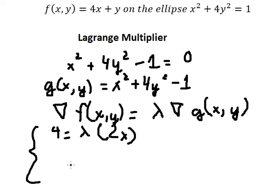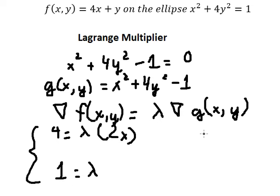The second equation: we need to do the first derivative of f with respect to y. That should be one, and for the term without y we get zero. Then the first derivative of g with respect to y gives eight y, and we multiply by lambda.